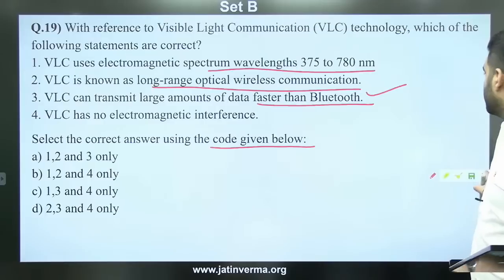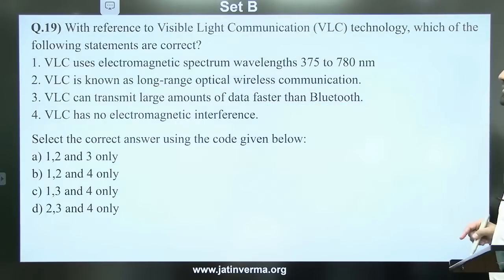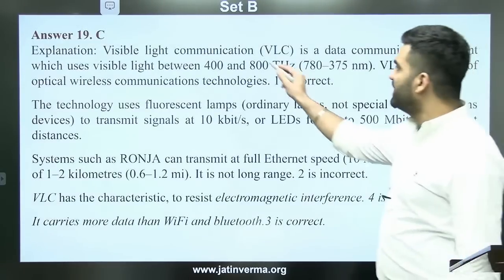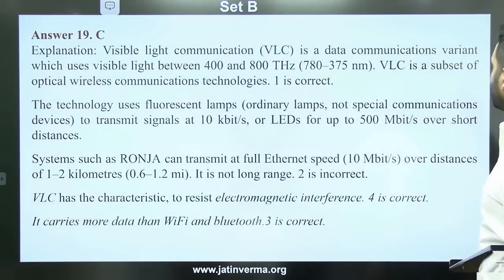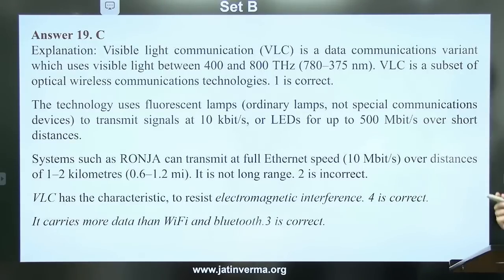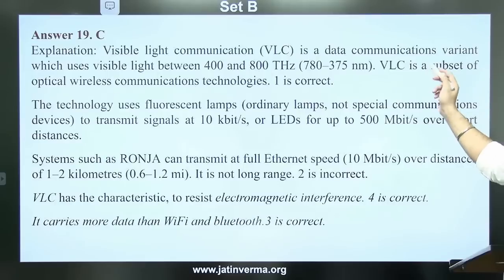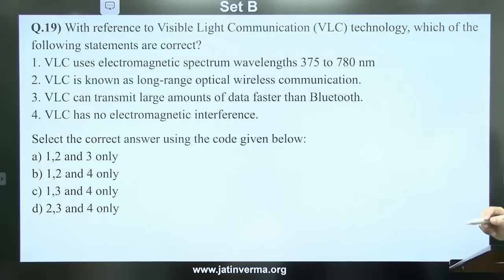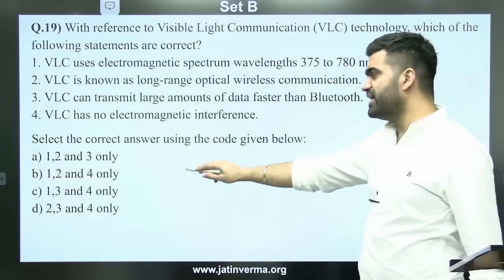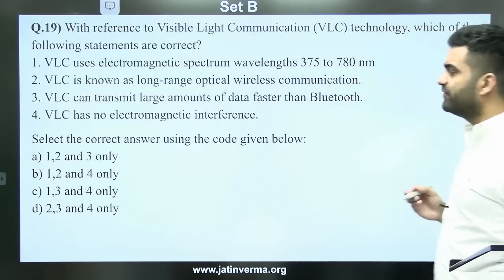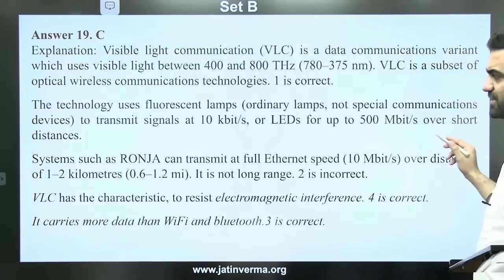The answer to question 19 is C. Visible light communication is a data communication variant which uses visible light between 400 and 800 THz, corresponding to 780 to 375 nm. So the first option is incorrect. The correct answer includes statements 1, 3, and 4.